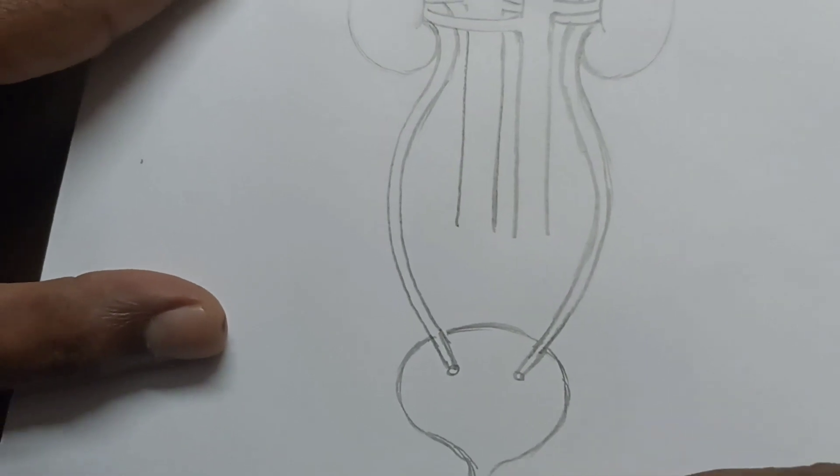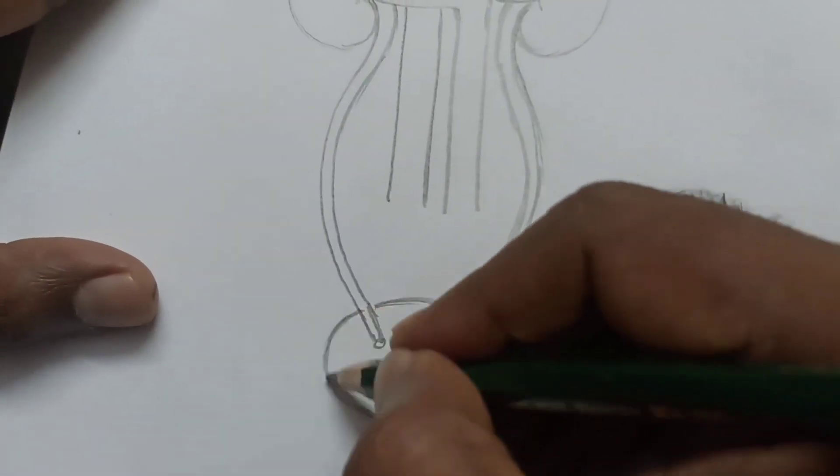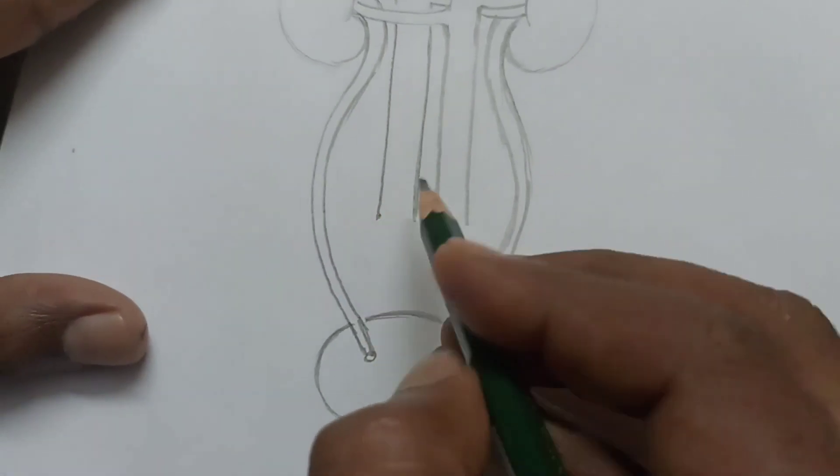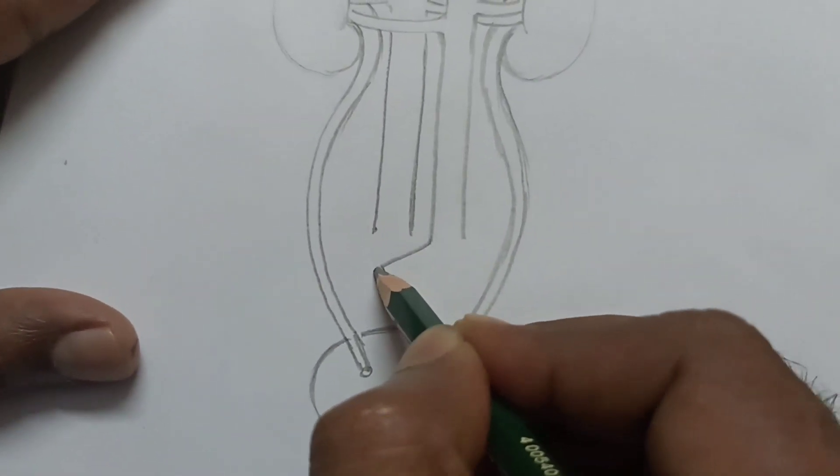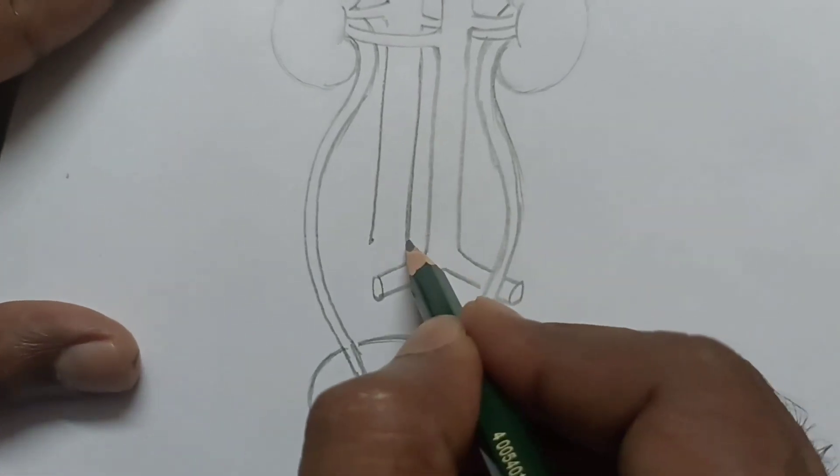Now I am drawing the urinary bladder. You draw like this. The end portion of the urinary bladder is the urethra. Now you draw blood vessels like this.